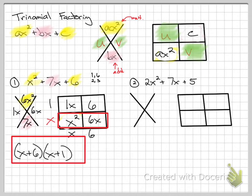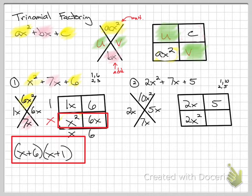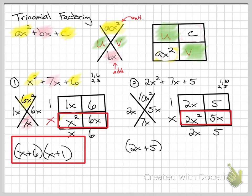For number 2: 2x² + 7x + 5. Top of diamond is 10x², bottom is 7x, area diagram has 2x² and 5. Factors of 10: 1 and 10, or 2 and 5. Adding to 7 means it's 2x and 5x. Looking at the bottom row, the common factor is x. Then: x times 2 gives 2x, 2x times 1 gives 1, and 1 times 5 gives 5. The answer is (2x + 5)(x + 1).